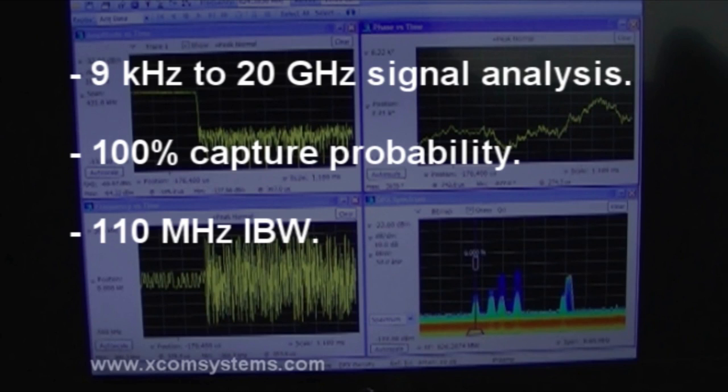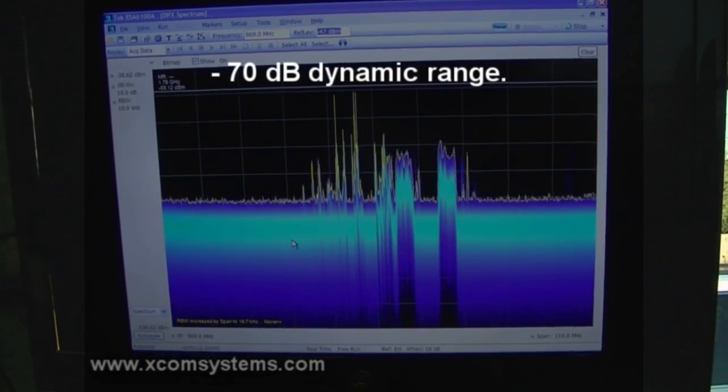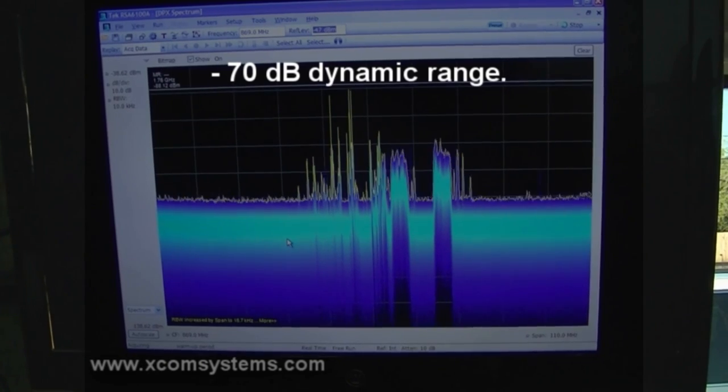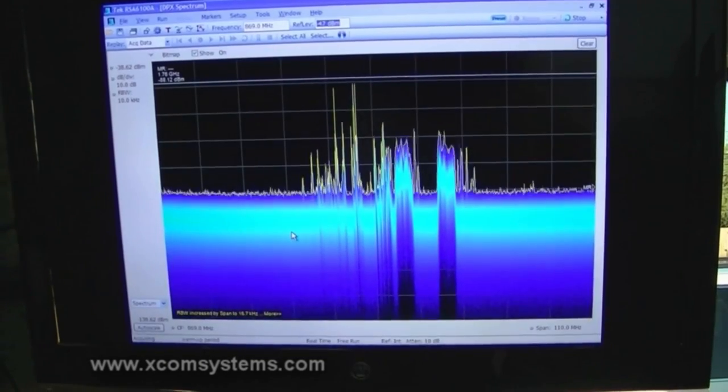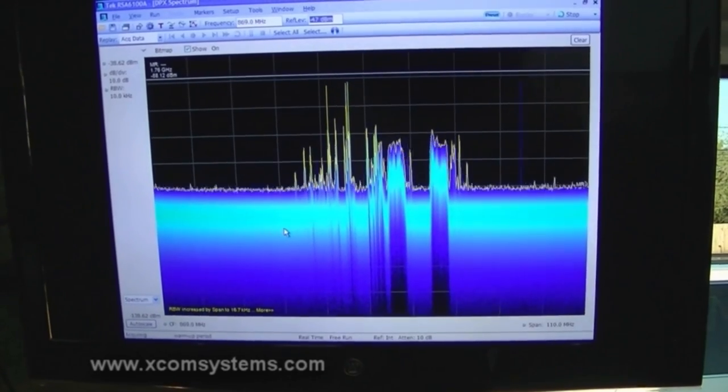The system can detect, with essentially 100% probability of intercept, any transmission greater than a few microseconds long within an instantaneous bandwidth of up to 110 MHz. This capability has a spurious-free dynamic range of over 70 dB, which allows it to find difficult-to-locate low-power interfering sources or rogue emitters in today's complex RF environment.